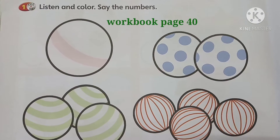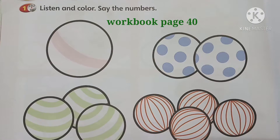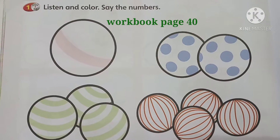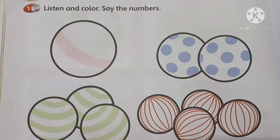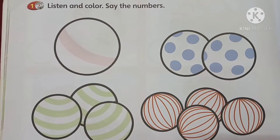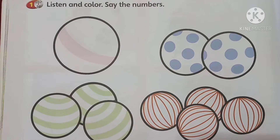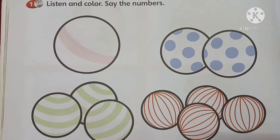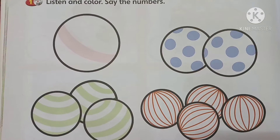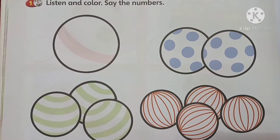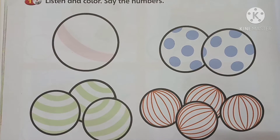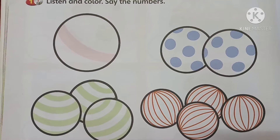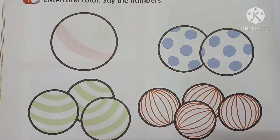For the second activity, please open your workbook on page 40. Listen and say the numbers: one red ball. One, two blue balls. One, two, three green balls. One, two, three, four orange balls.